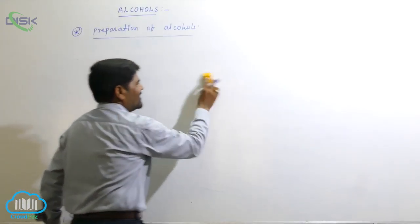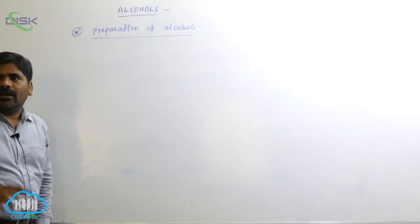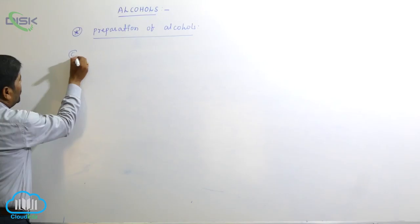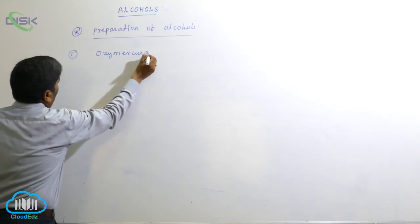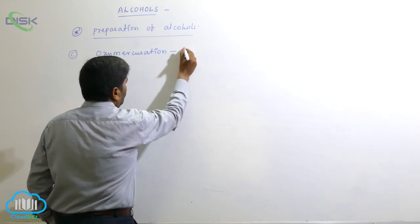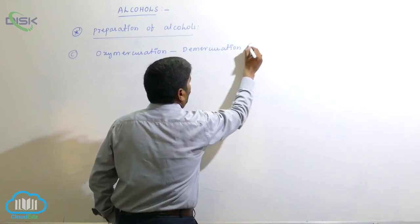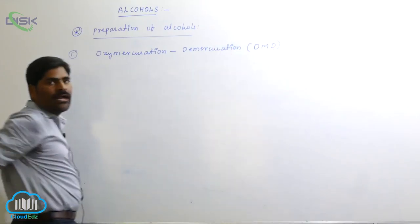The second one — coming to one more. It is already there in NCERT. It is a very, very important reaction. That is oxymercuration and demercuration of alkene. This is the third one — oxymercuration and demercuration, abbreviated as OMD.